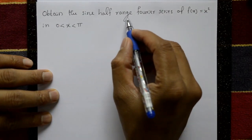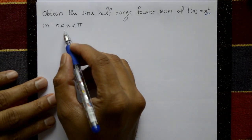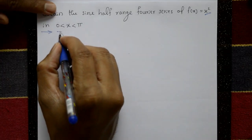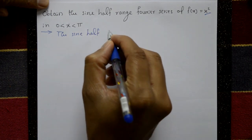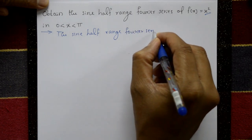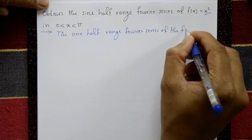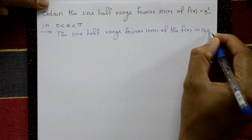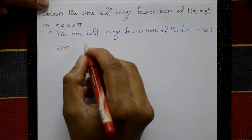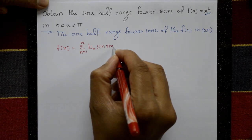Obtain the sine half-range Fourier series of f(x) = x² on the interval 0 to π. The sine half-range Fourier series for f(x) on the interval 0 to π is given by f(x) = summation from n=1 to infinity of bₙ sin(nx). This is equation number one.